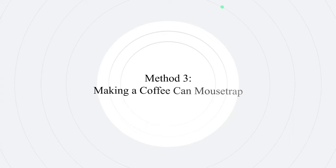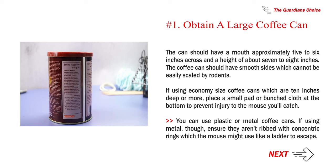Method 3: Making a coffee can mousetrap. Number 1: Obtain a large coffee can. The can should have a mouth approximately 5 to 6 inches across and a height of about 7 to 8 inches. The coffee can should have smooth sides, which cannot be easily scaled by rodents. If using economy-sized coffee cans, which are 10 inches deep or more, place a small pad or bunched cloth at the bottom to prevent injury to the mouse you'll catch. You can use plastic or metal coffee cans. If using metal, though, ensure they aren't ribbed with concentric rings which the mouse might use like a ladder to escape.